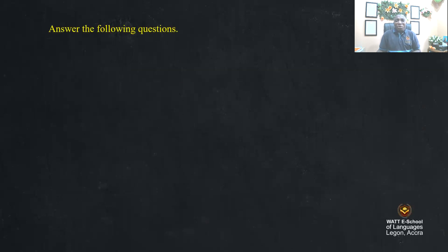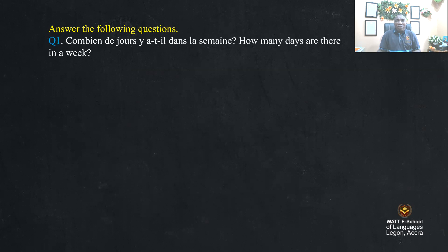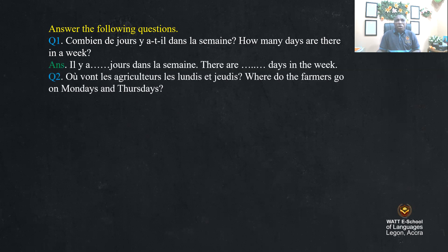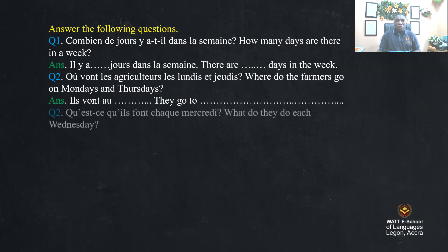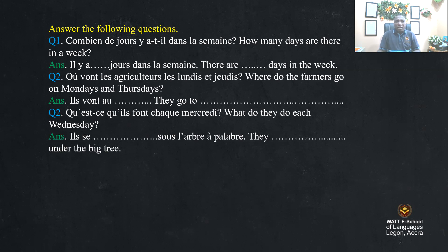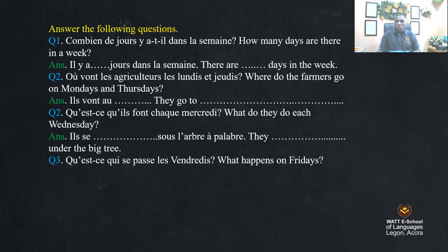All right. Answer the following questions. Combien de jours y'a-t-il dans la semaine? How many days do you have in a week? Où vont les agriculteurs les lundis et jeudi? Where do the farmers go on Mondays and Thursdays? Qu'est-ce qu'ils font chaque mercredi? What do they do each Wednesday? Qu'est-ce qu'il se passe le vendredi? What happens on Friday? Il y a sept jours dans la semaine — there are seven days in a week. Ils vont au champ — they go to farm.